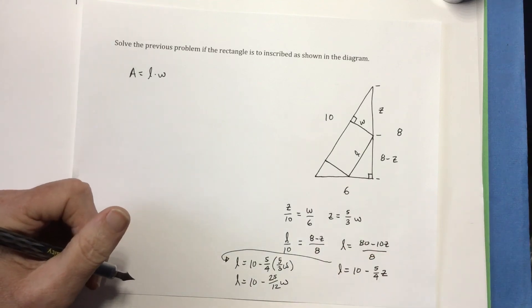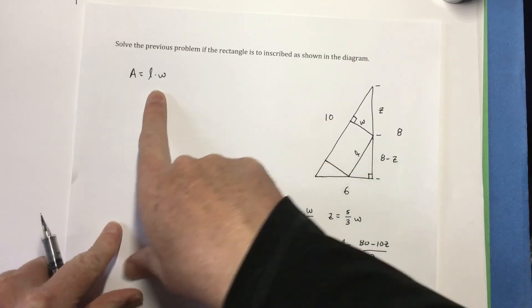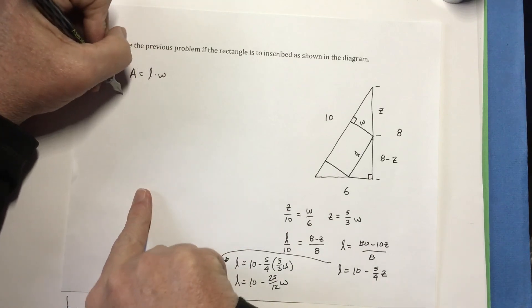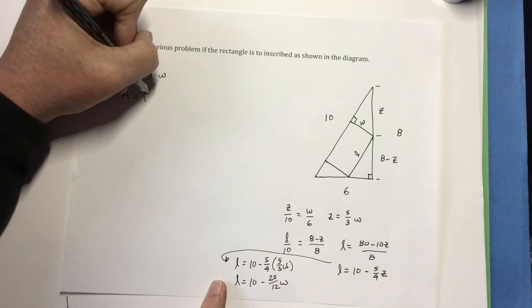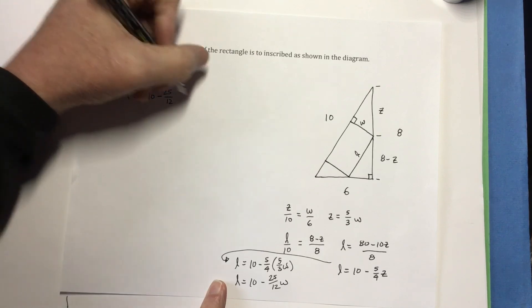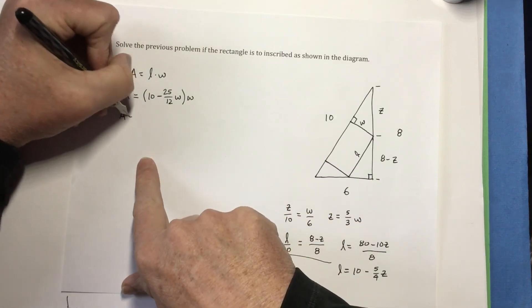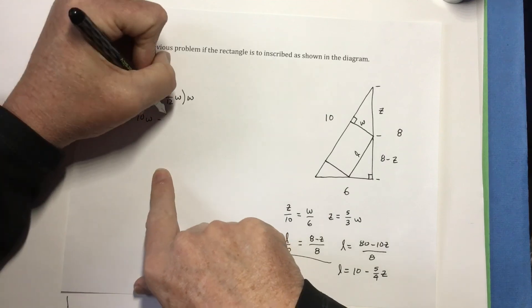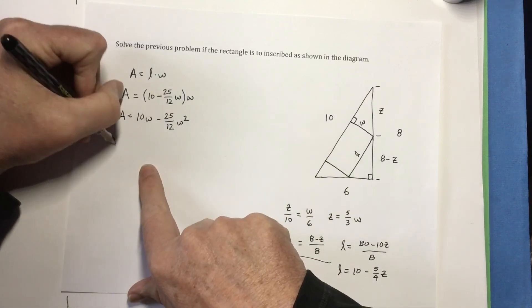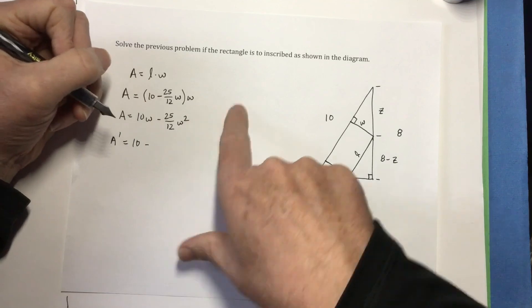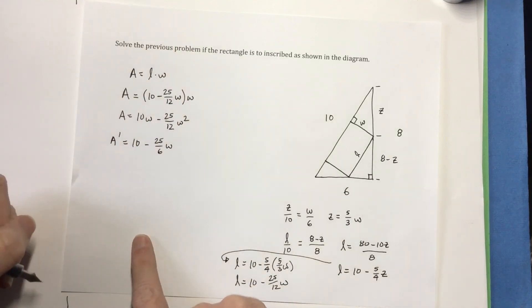Could have written that a little better, I think, but I'm not going to fix it. So there's my L. So now I can use that in here and reduce my function to just one variable. So that means my new area function will be L, which is 10 minus 25 twelfths times W times W. Well, that means area equals 10W minus 25 twelfths W squared. And that means that A prime equals 10 minus 2 times 25 twelfths will be 25 sixths W.